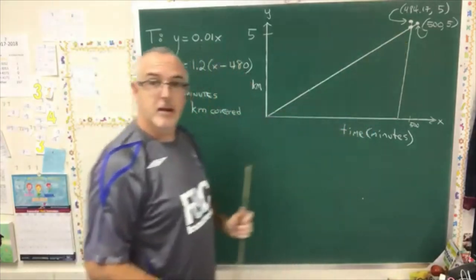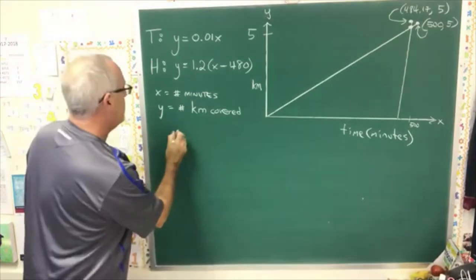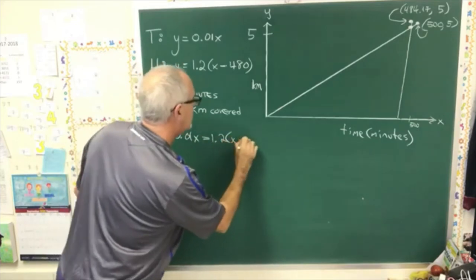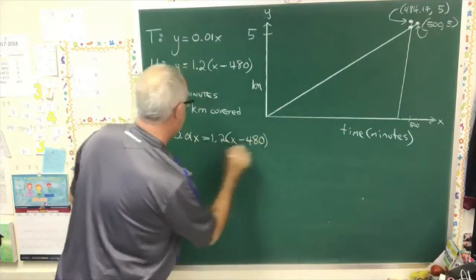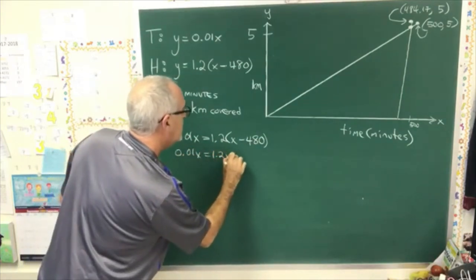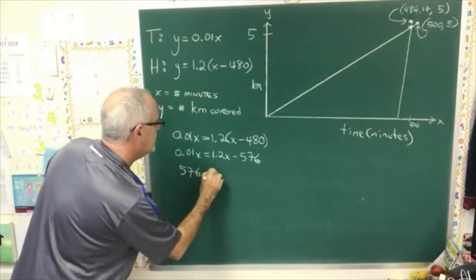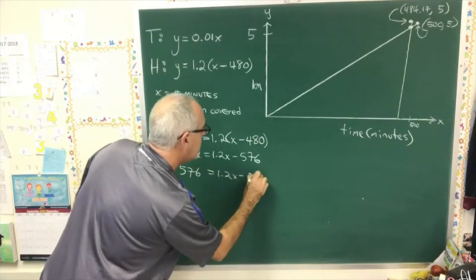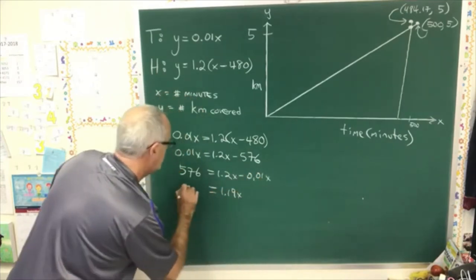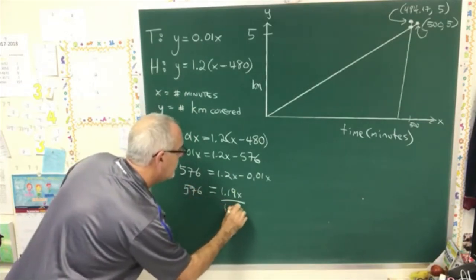Trying to answer it with the graph is a little bit awkward. As you can see, it's hard to even draw it. So, I'm going to show the comparison here. 0.01x equals 1.2 times x minus 480. This is 1.2x minus 576. Doing a bit of algebra, 576 equals 1.2x minus 0.01x, which is 1.19x. And then we divide both sides by 1.19x.